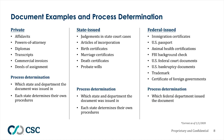The last type of documentation you may encounter is federally issued documents. These include immigration certificates, U.S. passports, animal health certifications, FBI background checks, U.S. federal court documents, U.S. bankruptcy documents, trademark documents, and certificates of foreign government documents. The process for these depends on which federal department they are issued from.